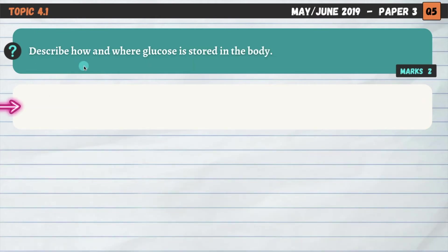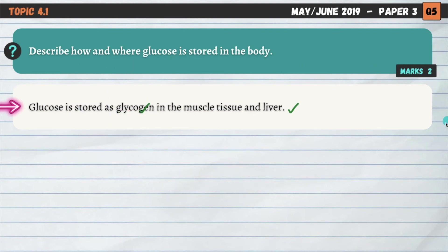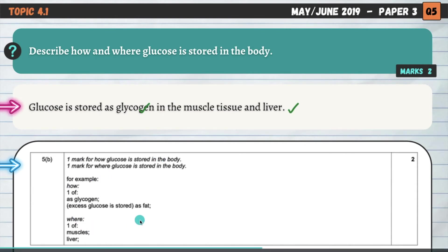Next question, also on 4.1: describe how and where glucose is stored in the body. Glucose is stored as glycogen in the muscle tissue and the liver. When we have excess glucose — the simple sugar used to produce energy — we store it as a different molecule called glycogen, which can be stored in either the muscle tissue or the liver. So the question has two parts: how is glucose stored? As glycogen. Where? Muscle and liver.